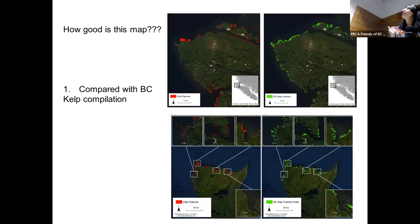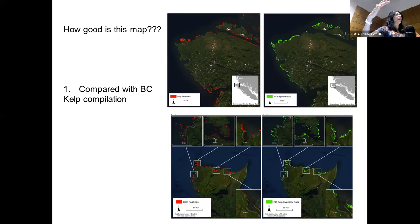A question came up about whether kelp goes into the fjords. Yes, it goes in the fjords as well — it doesn't like fresh water, so it avoids areas with a lot of fresh water coming in from glaciers or creeks or rivers. But it likes cold ocean water, and you can have kelp in the inlets.